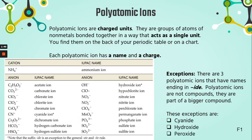Polyatomic ions are charged units. They are groups of atoms of non-metals that are bonded together in a way that acts like they're one thing — like a single unit. You're going to find them on the back of your periodic table. If you look at any chart, you're going to see a whole lot of combinations of non-metals, and they have charges and special names. Every polyatomic has a name and a charge associated with it.